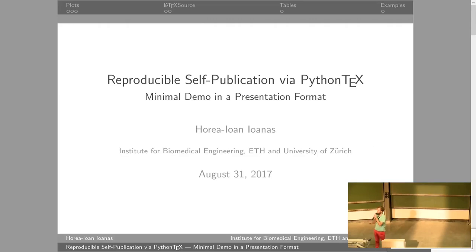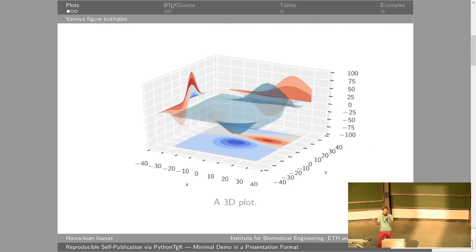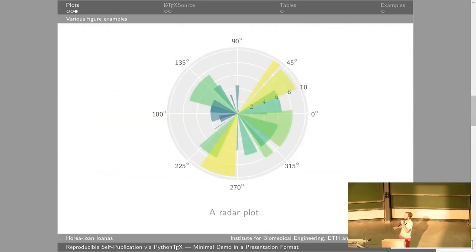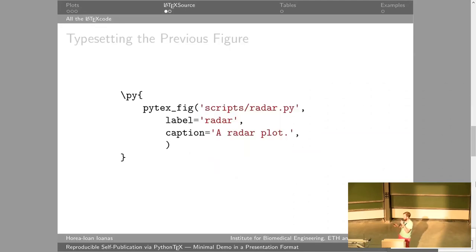Ideally, you can put the figures from your Python scripts directly into your document. This is a LaTeX document — this is not a bitmap anywhere. These figures are generated directly from Python code. The code for this looks like this in the LaTeX document.